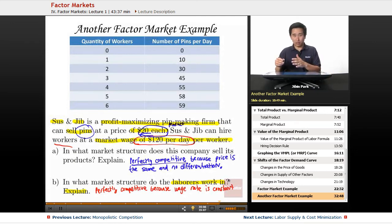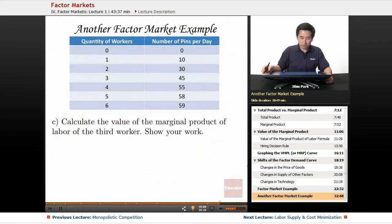For part C, let's calculate the value of the marginal product of labor of the third worker. Show your work. We have to figure out first of all what is the price of a pin. Let's say a pin will cost $10, so the price here is $10 all the way down—no matter how many you sell, each pin will cost $10.